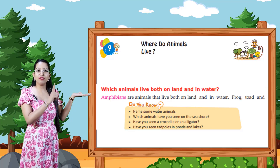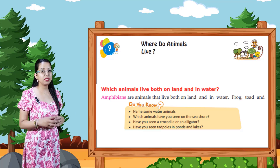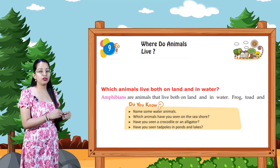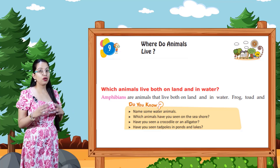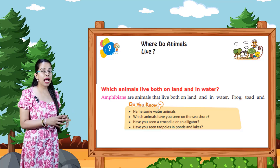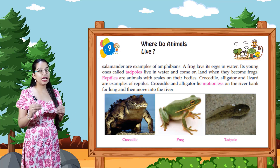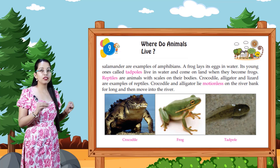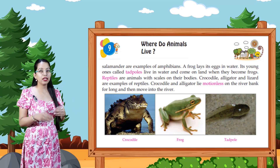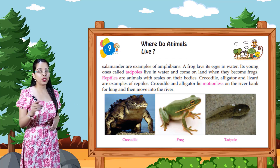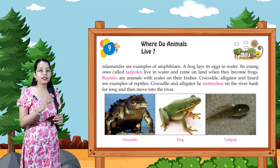Which animals live both on land and in water? Amphibians are animals that live both on land and in water. Frog, toad, and salamander are examples of amphibians. A frog lays its eggs in water; its young ones called tadpoles live in water and come on land when they become frogs.